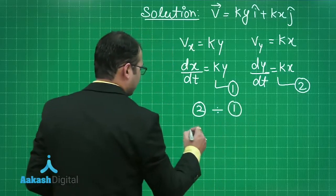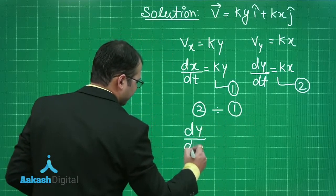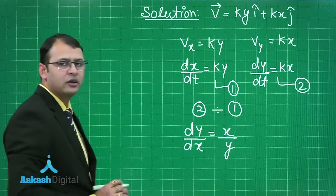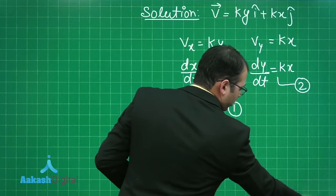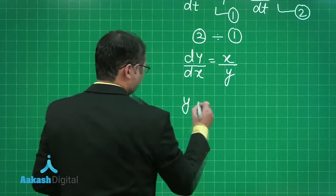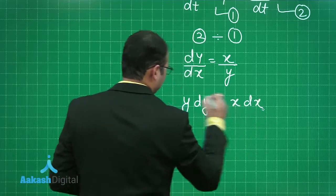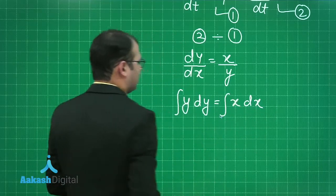What I may get is dividing equation 2 with equation 1, I will get dy by dx as x by y. Just cross multiply these values. What you will get from here is y dy is equals to x dx and integral.